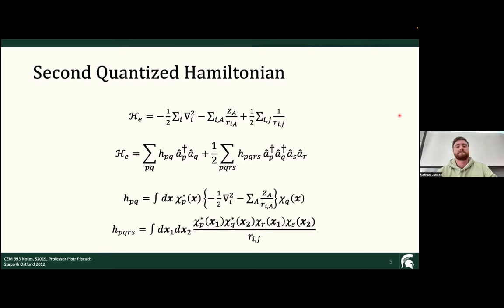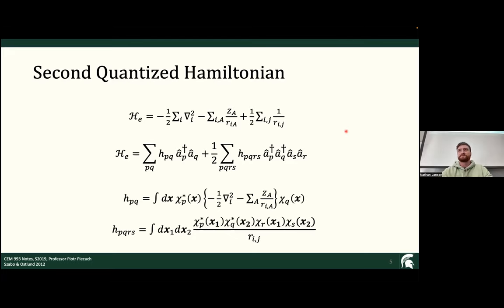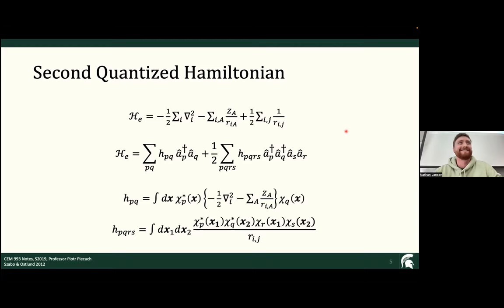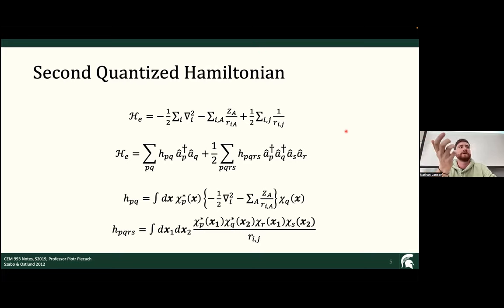I'm being very specific with my notation and saying occupation number vectors — more informally we'd probably just say Slater determinants. There's also a distinction between the Fermi vacuum and the true vacuum, which is a deeper topic we'll set aside. These integrals are classically tractable, so that's not the hard part of the problem.